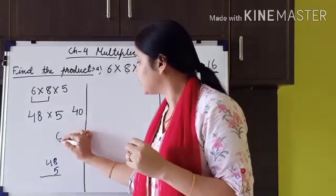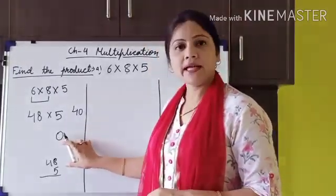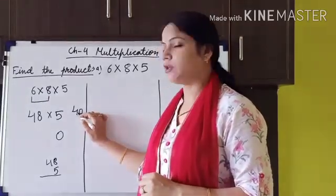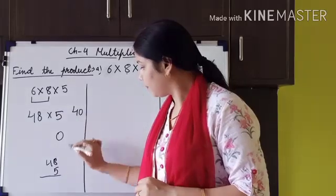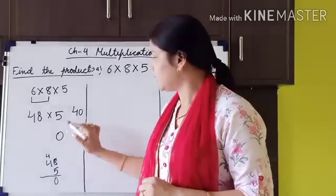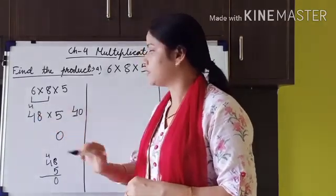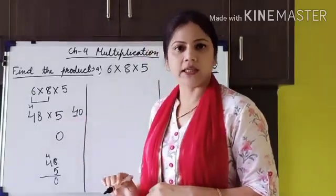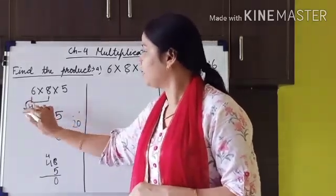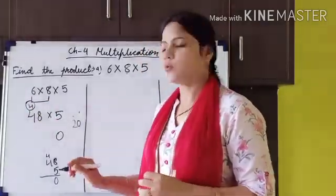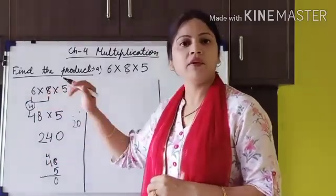We write 0 at the 1's position because 0 is the ones digit of 40. We carry forward the 4 to the 10's position. Now 5 fours are 20, and we add the carry-forward 4: 20 plus 4 equals 24. So we write 24 here. The product after multiplying these 3 numbers is 240.